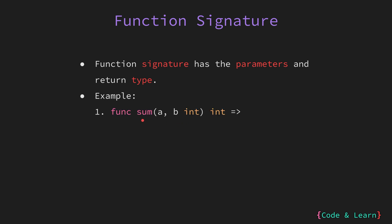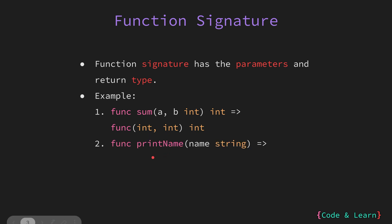Here we have a function sum which takes two integer values a and b and returns an integer value. So the function signature for this would be: func that accepts two integer values and returns int. Next we have the printName function which takes a string value but returns nothing. The function signature for this would be a function that takes a string but returns nothing.